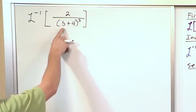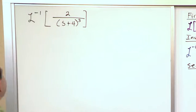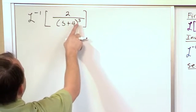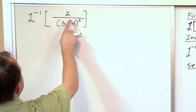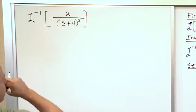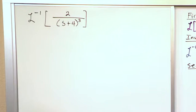If I were to replace s with s minus 4, then I would basically get rid of this and I would have 2 over s cubed in the bottom, and I know how to inverse transform things that look like that.